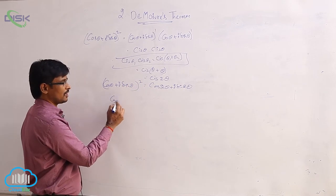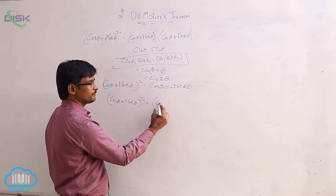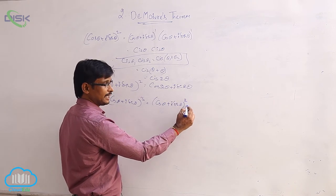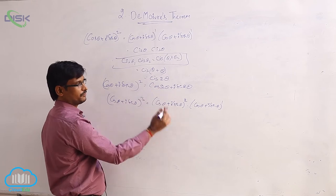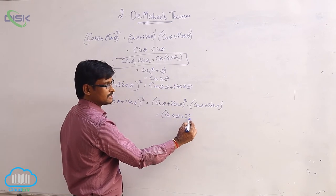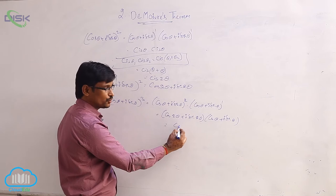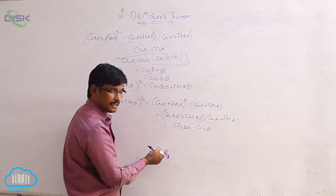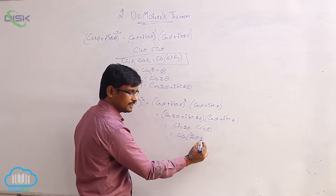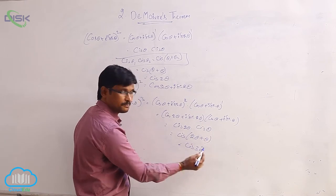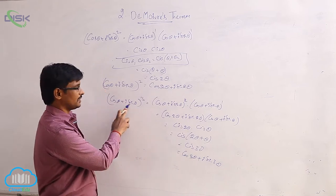Suppose cos theta plus i sine theta whole power 3. We can write this as cos theta plus i sine theta whole power 2 into cos theta plus i sine theta whole power 1. The value of the squared term is cos 2 theta plus i sine 2 theta, which is cis 2 theta, and the other term is cis theta. Again applying the cis property, we get cis of 3 theta, and expanding: cos 3 theta plus i sine 3 theta. This is cos theta plus i sine theta whole power 3.